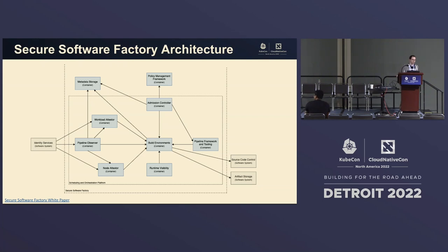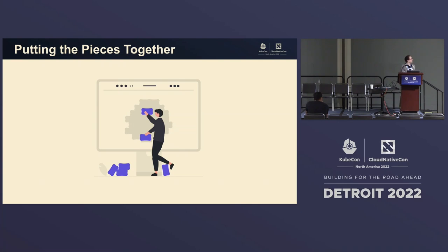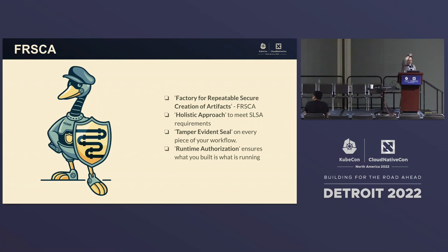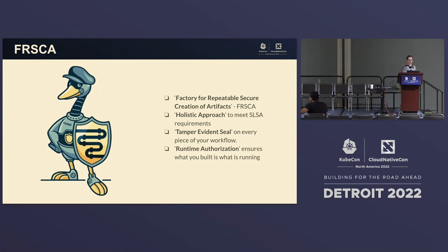So how does the secure software factory help protect the build and verify we're doing all the right things? Fresca stands for Factory for Repeatable Secure Creation of Artifacts. Because there's SALSA, there's Salsa Fresca — we're playing off that a little. It's an OpenSSF project, it's a holistic approach to meet SALSA requirements. We do a lot to make sure that if somebody tampers with the build, it's very clear and easily detected, and we include runtime authorization so you're only running what you built using a secure system like Fresca.